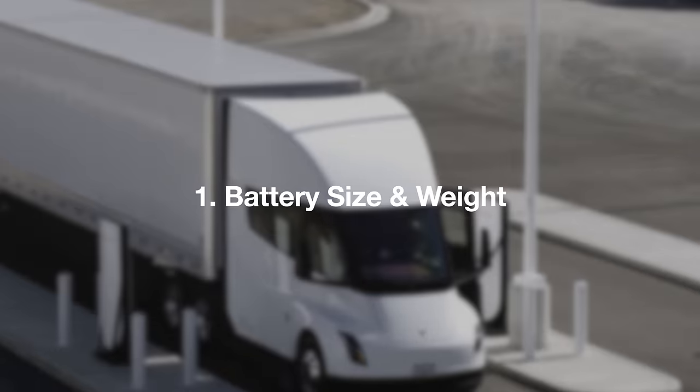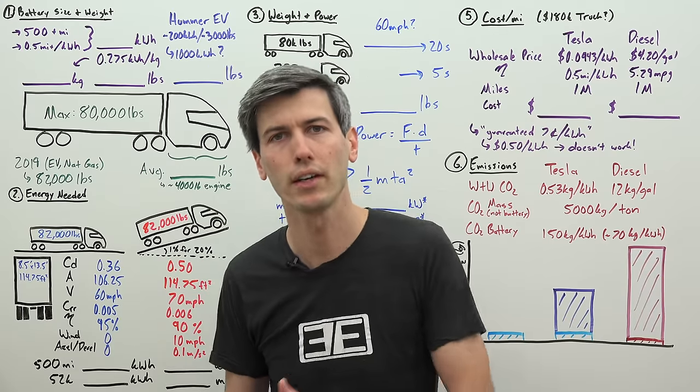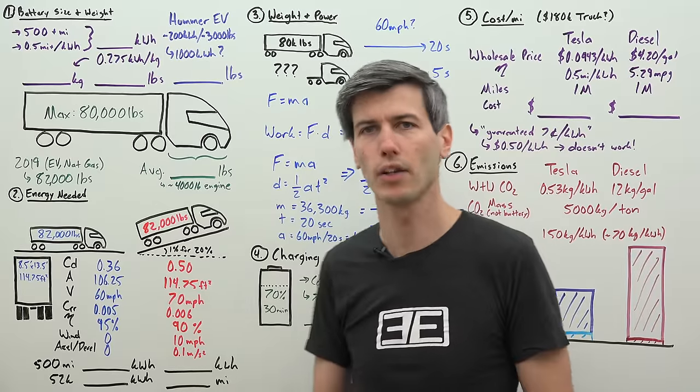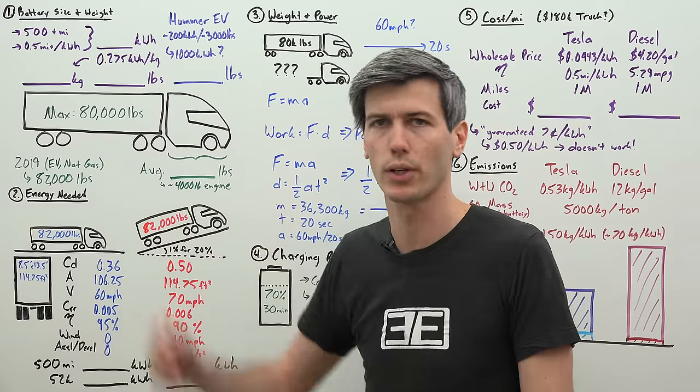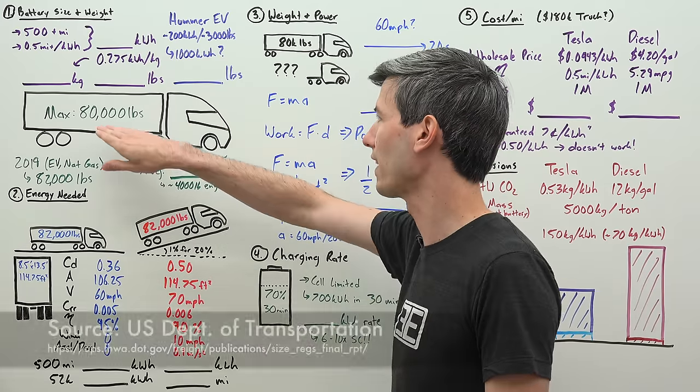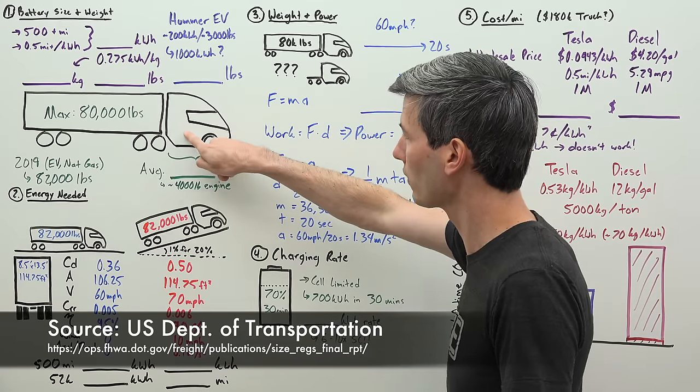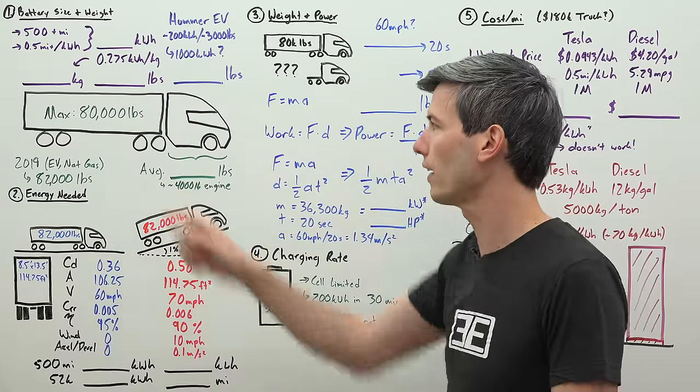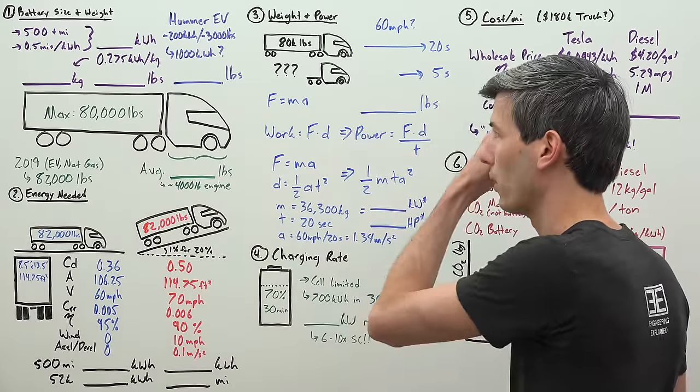We're going to start out with battery size and weight, because Tesla doesn't tell us what the weight of the battery is nor what the capacity of it is. The big challenge with an electric semi is that there is a maximum limit on how much your semi with trailer can weigh, and that is 80,000 pounds. You cannot exceed this. So if your truck weighs a lot and your batteries weigh a lot, that means less cargo you can take around.